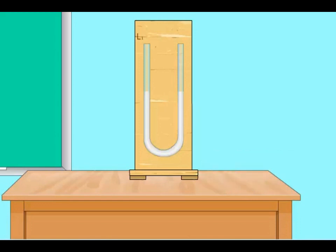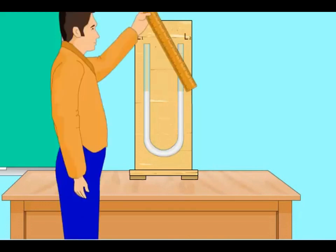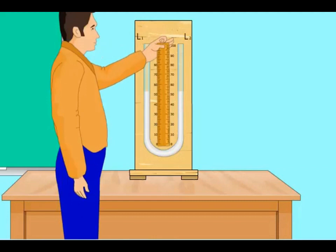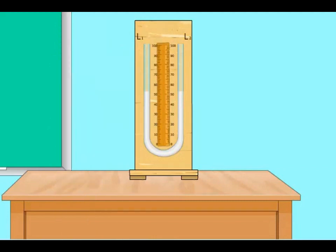There are two limbs in the manometer L1 and L2. A graduated scale is fixed between the two limbs. When both the limbs are exposed to same pressure, the fluid level in the two limbs will be equal.